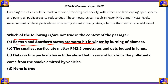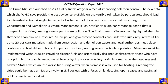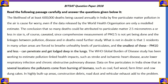Statement one says 'eastern and southern states' are worst hit. Looking at the passage, it states: 'providing cleaner fuels to those who have no option but to burn biomass would have a big impact in the northern and eastern states, which are the worst hit during winter.' The passage says 'northern and eastern states,' while statement one says 'eastern and southern states' — so statement one is definitely incorrect. Now for statement two: 'the smallest particulate matter PM2.5 penetrates and gets lodged in the lungs.'